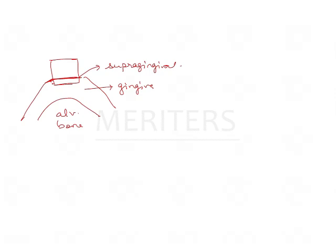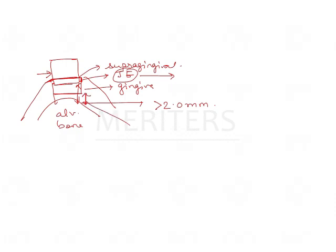Supposing you want to give a subgingival margin, then this amount of gingiva is affected and the junctional epithelium is affected. But the total biologic width is still around 2 mm or greater, so biologic width has not been violated. But suppose you want to go deeper — placing the margin here because the tooth structure is less — here you are reducing the junctional epithelium considerably and coming close to the alveolar bone.